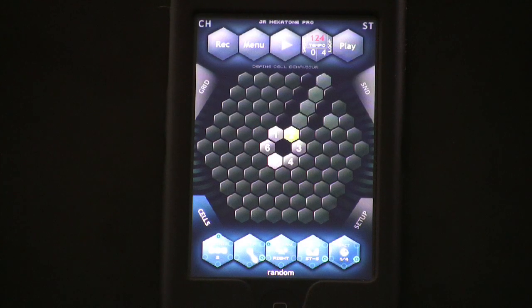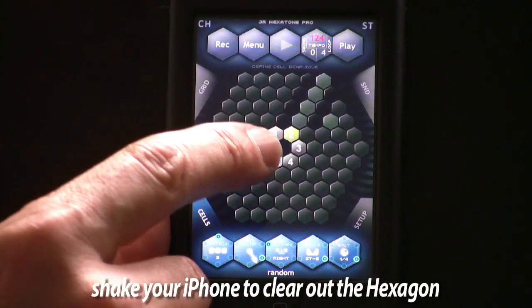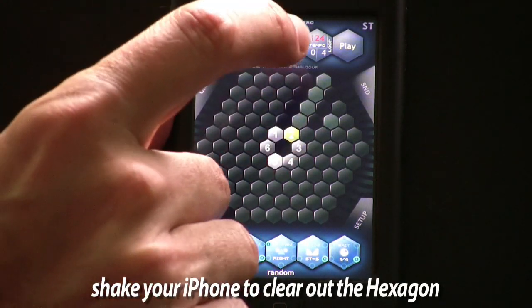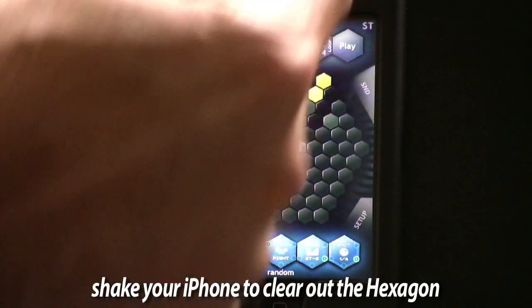Let's take a look at some Hexatone basics. Right now I have one oscillator active, you see number two. If I hit the play icon it begins the path of number two.